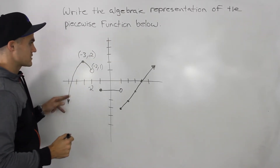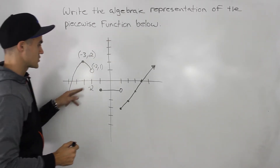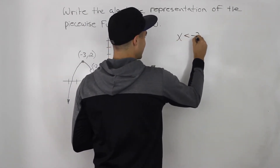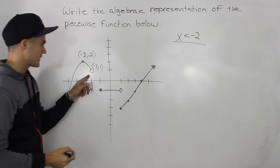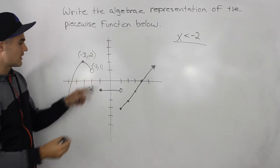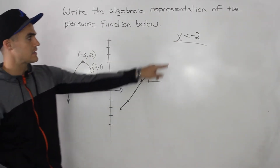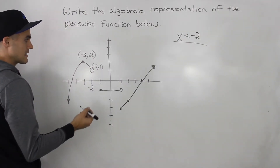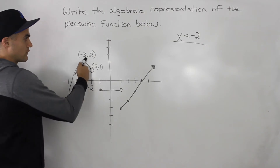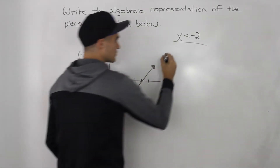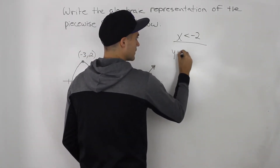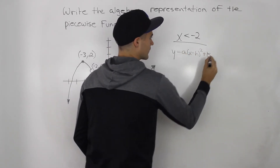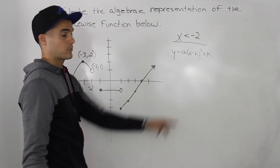Let's find an algebraic expression. This is going to be for when x is less than negative two. The reason why it's less than negative two is because there's a hole there. If this was a solid dot, then it'd be x is less than or equal to negative two. This is a parabola with a vertex at negative three and two. We know the general format of a parabola, so we can plug in that vertex.